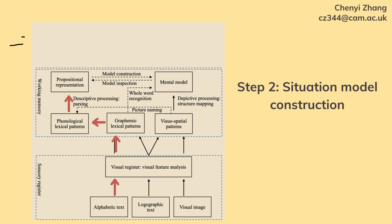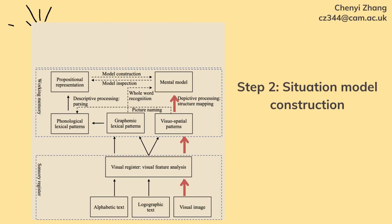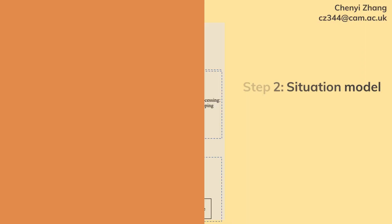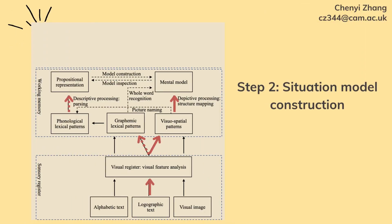In the working memory system, different routes will be taken by the different patterns to build the situation models. The alphabetic letters first activate the lexical patterns, which will automatically activate the phonological patterns. The phonological patterns will then be parsed to form the propositional representations. The visual-spatial patterns, on the other hand, are depictively processed to form the mental model. This explains why the alphabetic texts are more difficult to process than the pictures — a detour to the phonological patterns has to be taken, while the visual-spatial patterns can be directly mapped onto the mental model. As for the logographic characters, both routes can be activated. When preceded by pictures, it will be more economical to just activate the visual-spatial route, and therefore there is no difference between processing Chinese sentences following pictures and a picture following a picture.